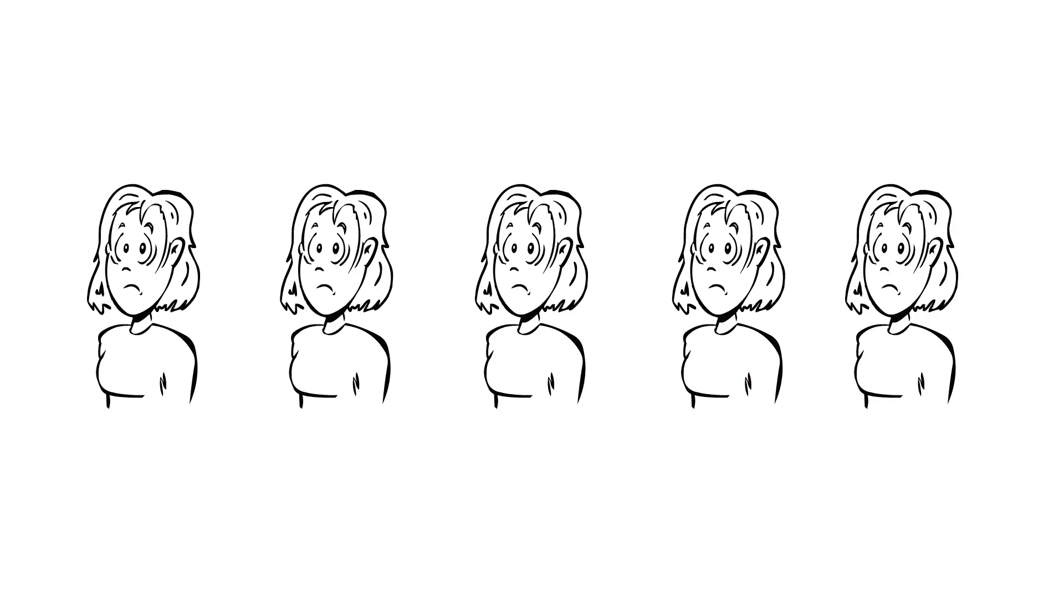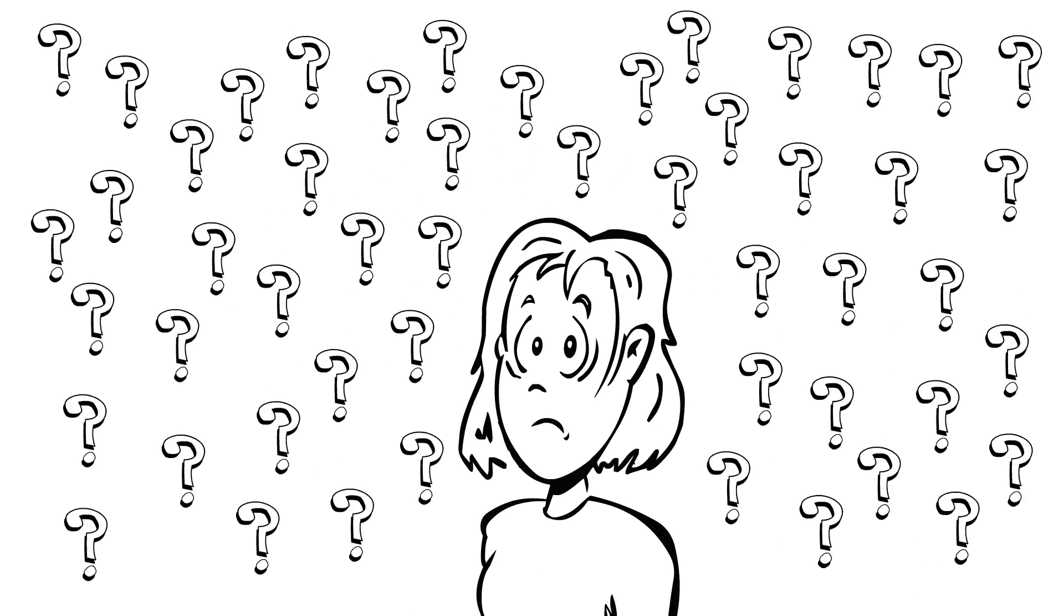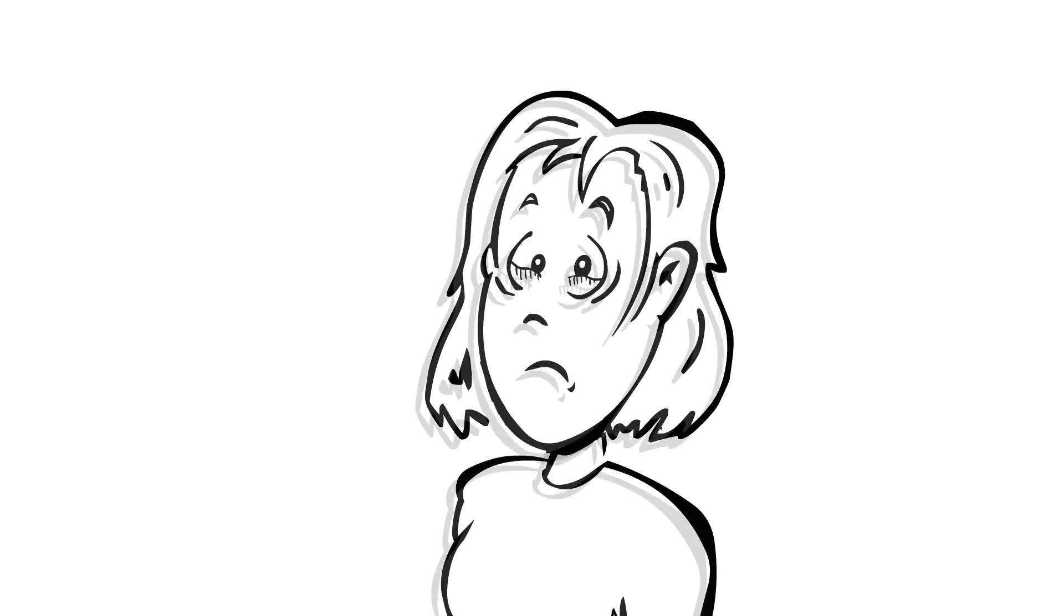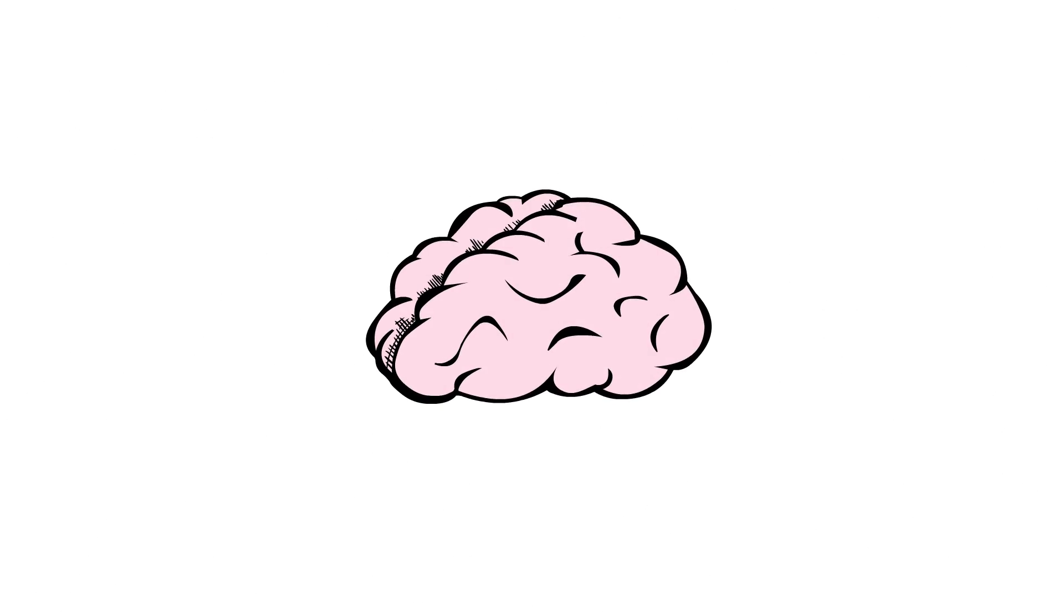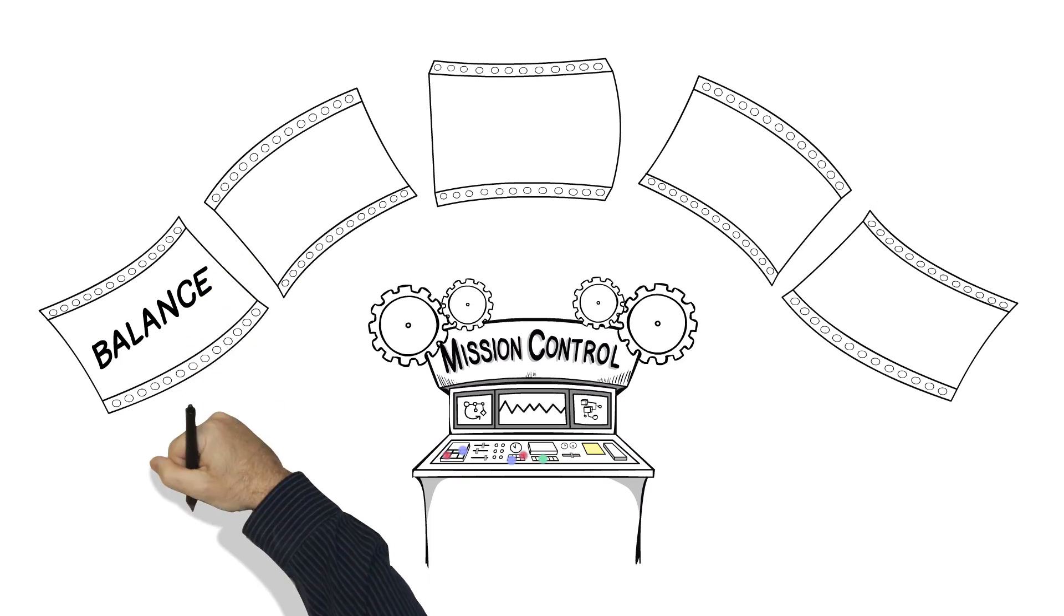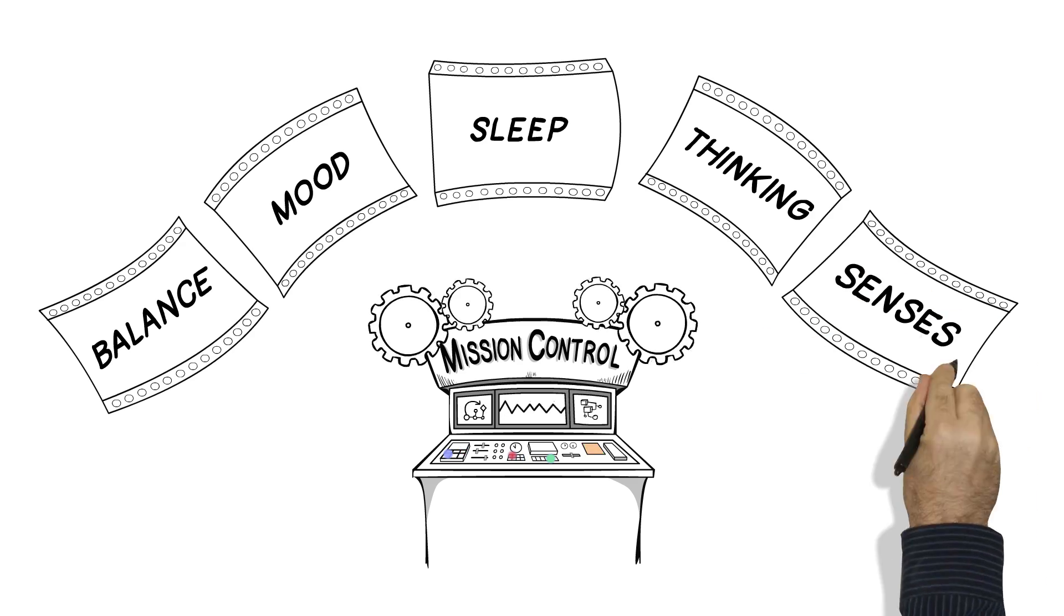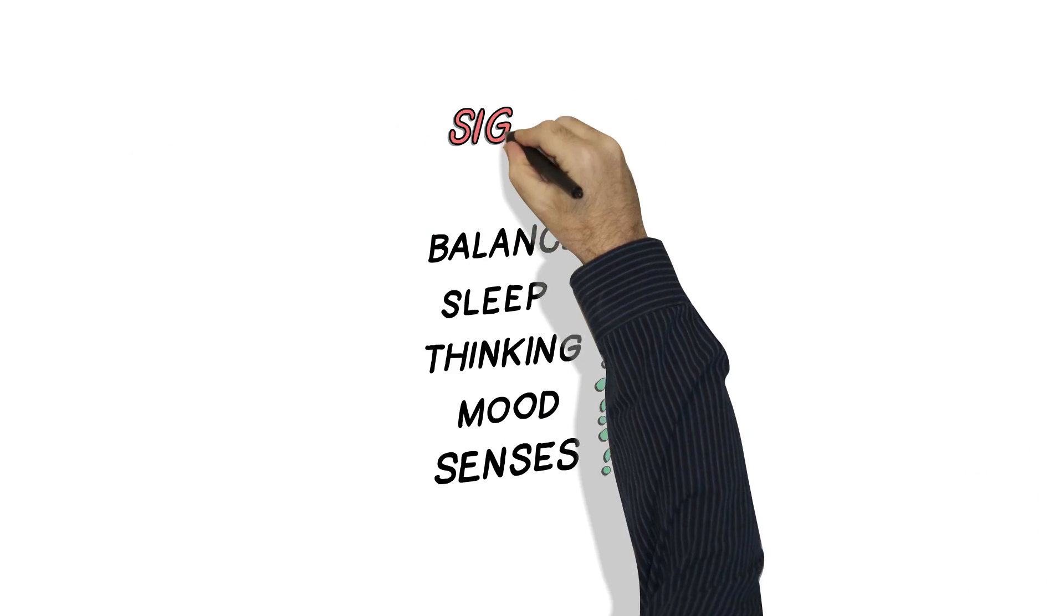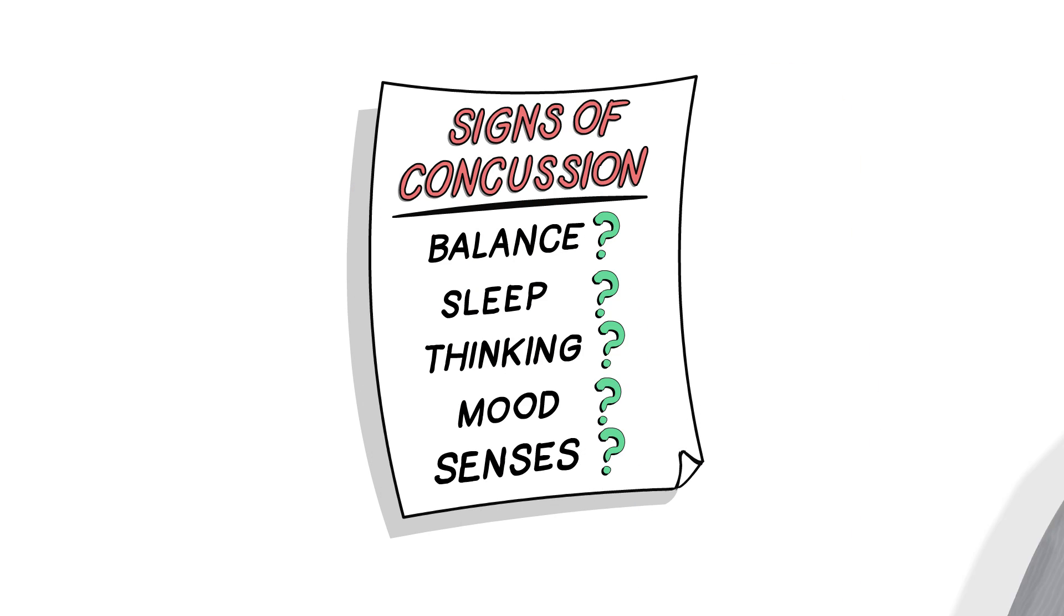You could feel a number of things after this happens. It could be a headache, confusion, blurry vision, feeling sick, or even just generally feeling weird. You see, your brain is like mission control, and it controls things like your balance, your mood, your sleep, your thinking, and your senses. These are all things that can be affected, and are signs that the brain's been disturbed a bit.